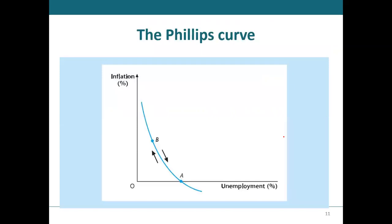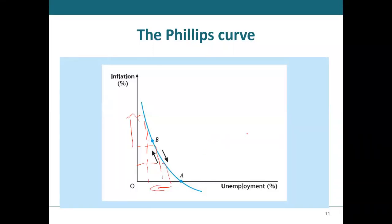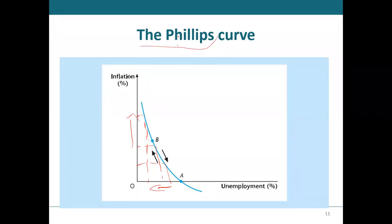If you are following what I was saying, that means the higher the inflation, the lesser the unemployment. If inflation goes up, unemployment is going to fall because real wages will become cheap, and once real wages become cheap, people are going to employ more, which will reduce unemployment. That is what we call the Phillips curve, propounded by an economist called Phillips, and it shows the relationship between inflation and unemployment.